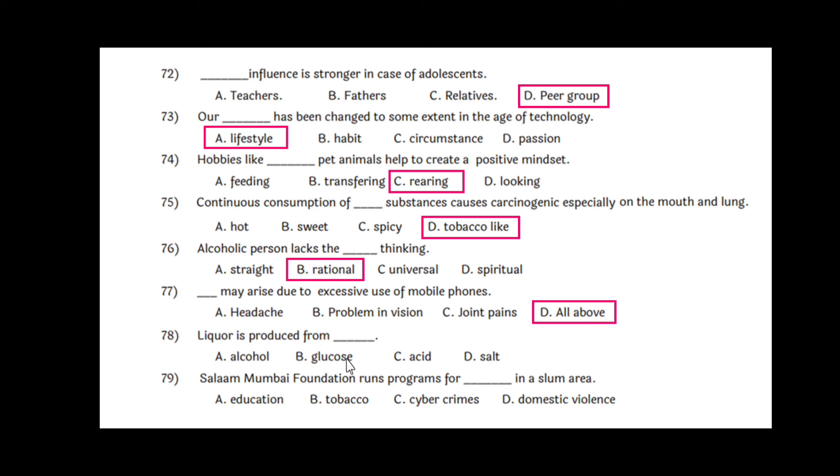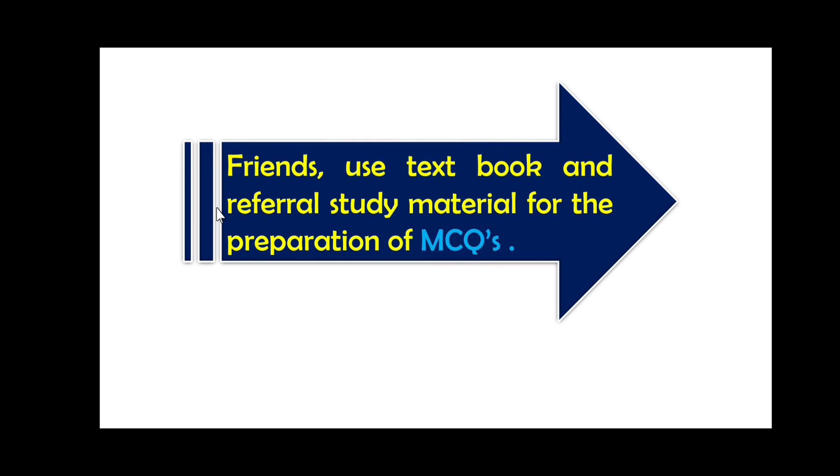Question 78: Liquor is a production from alcohol, option A. Question 79: Salaam Mumbai Foundation runs programs for dash in slum areas, and that is education. So friends, I think you have all gone through these different MCQs that are based on topics from chapters 6 to 10. Prepare them well. Go through this video again and again. Use the textbooks as well as some reference study material for additional preparation of these MCQs. Thank you for watching this video. We will meet again in the next video. Till that, bye.